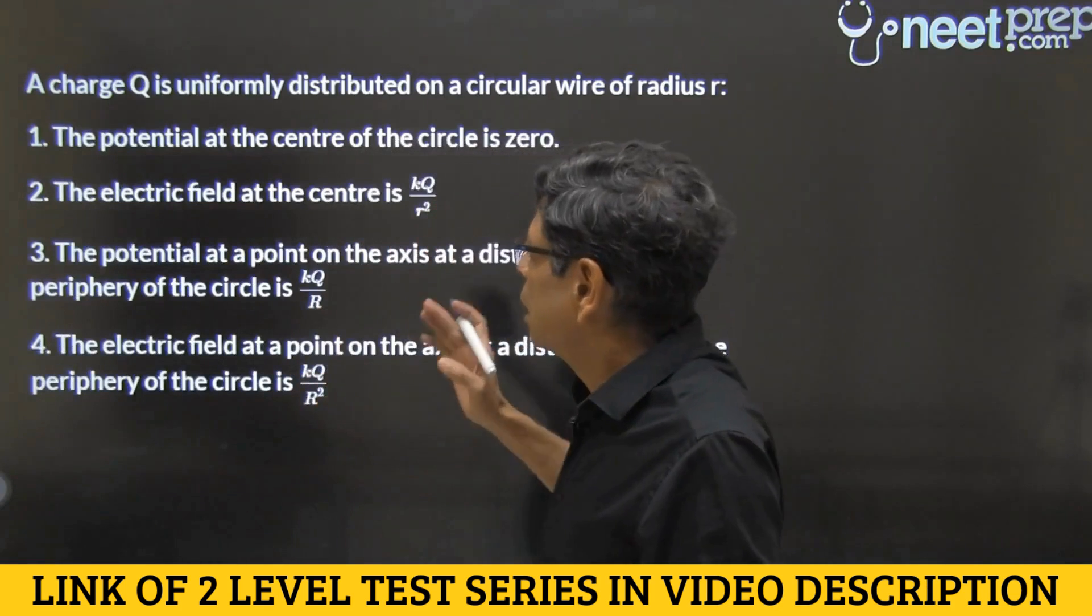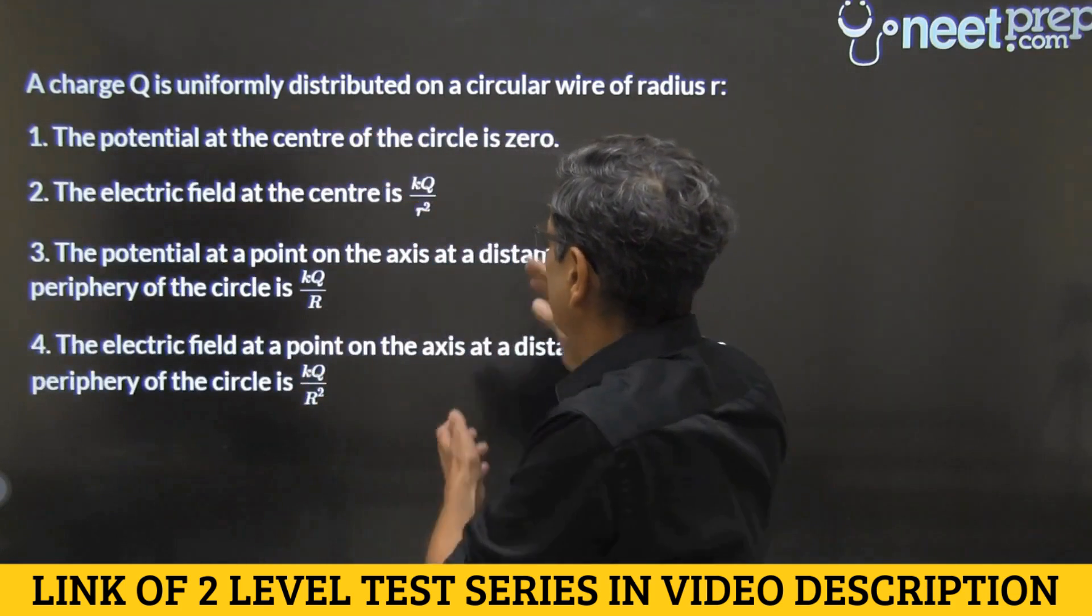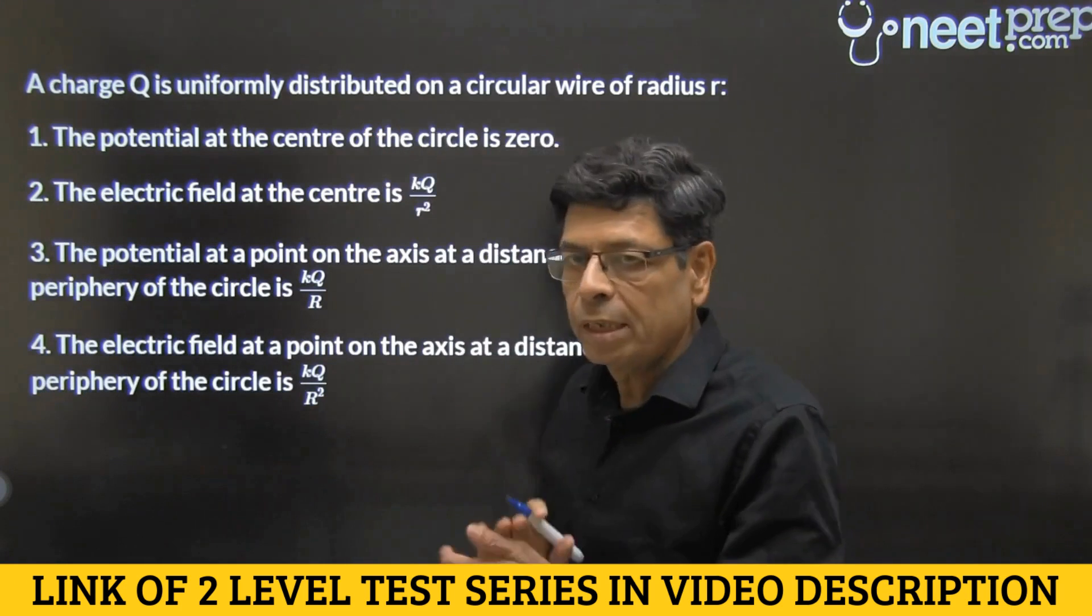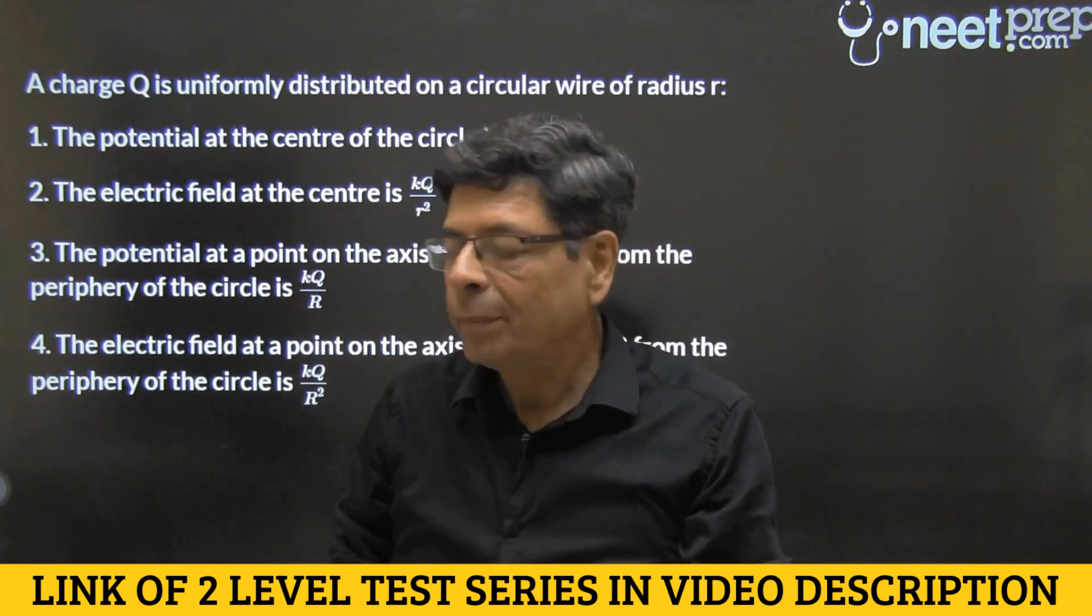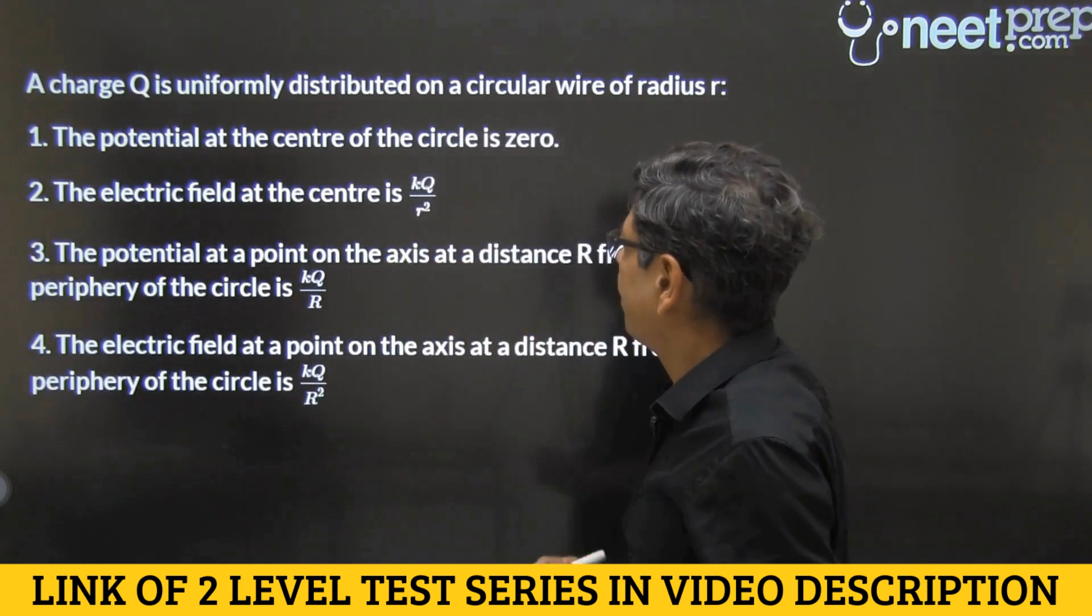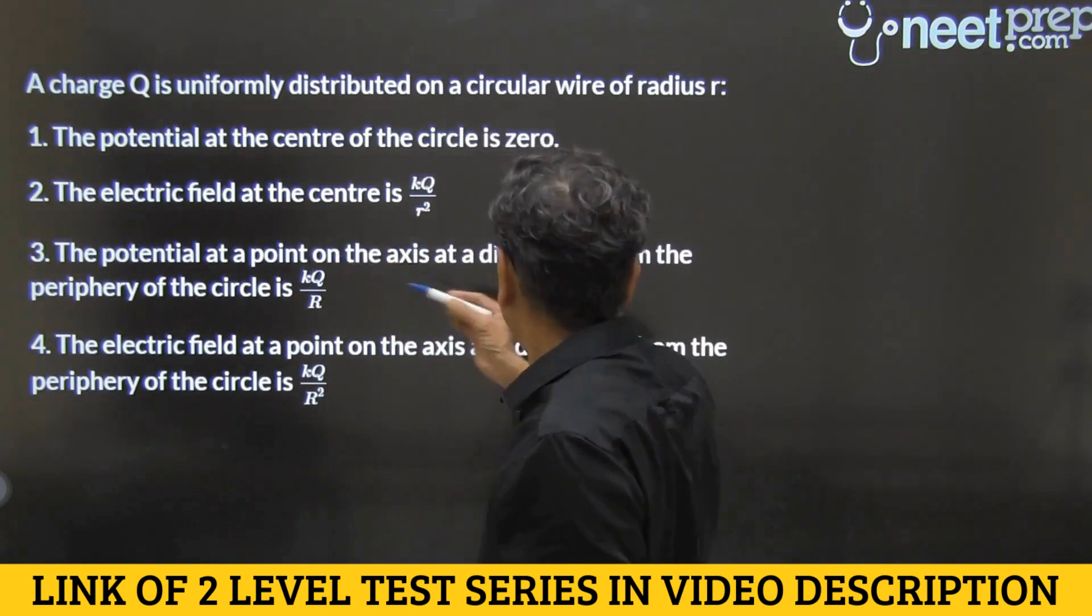In this question, we have got a charge Q uniformly distributed on a circular wire of radius R, and the following options are on our side. So which one is correct? Let's go through them one by one.